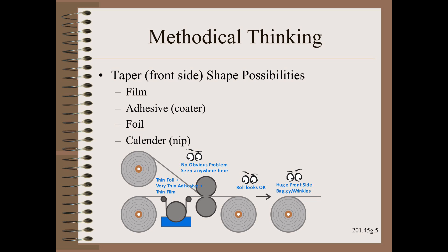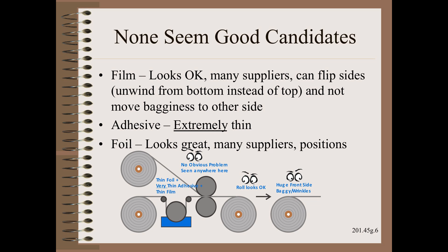These include the film, the adhesive, the foil, and the nip. Yet at first glance, none of the elements seem to be a good candidate.